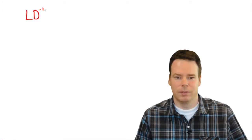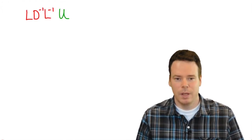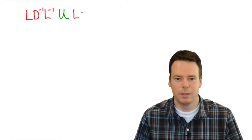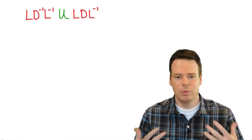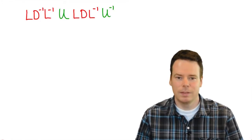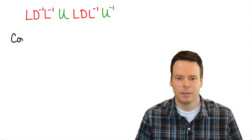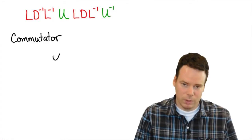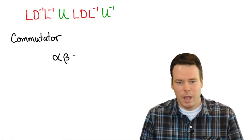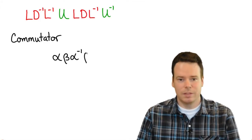The move sequence we just performed to do a three cycle on the corners had the form: do a move — which was L, D inverse, L inverse — do another move — which was the up move — undo the first move we did — which was L, D, L inverse — and then undo the second move we did, which was up inverse. This is an example of a commutator. In general, a commutator is a move sequence of the form: do a move, do another move, undo the first move you did, undo the second move you did.